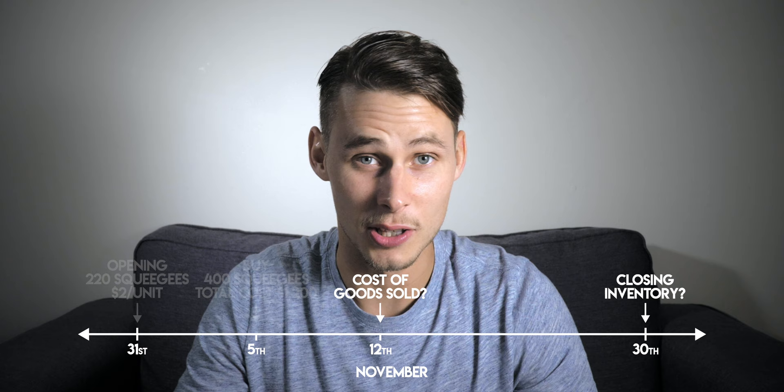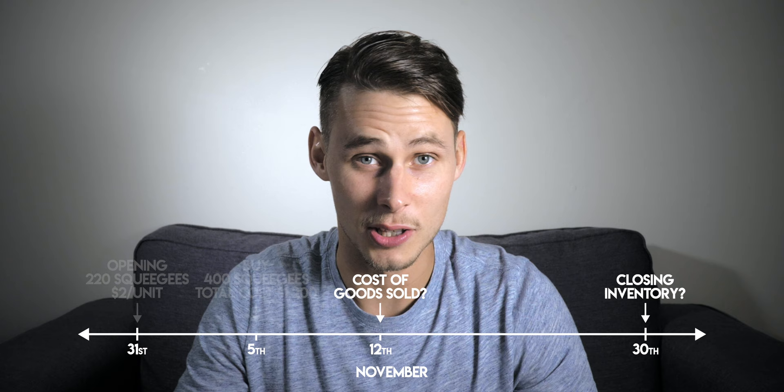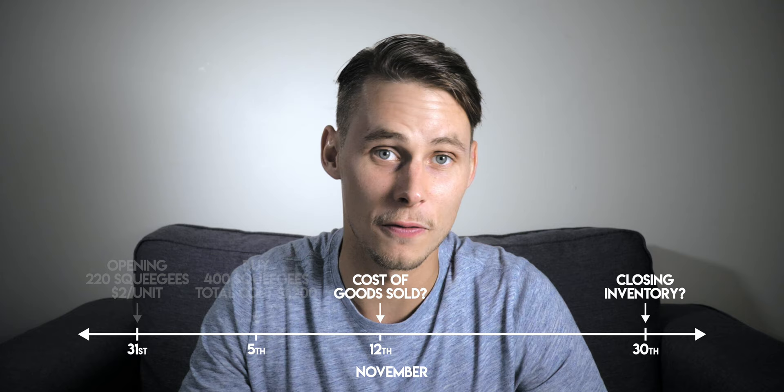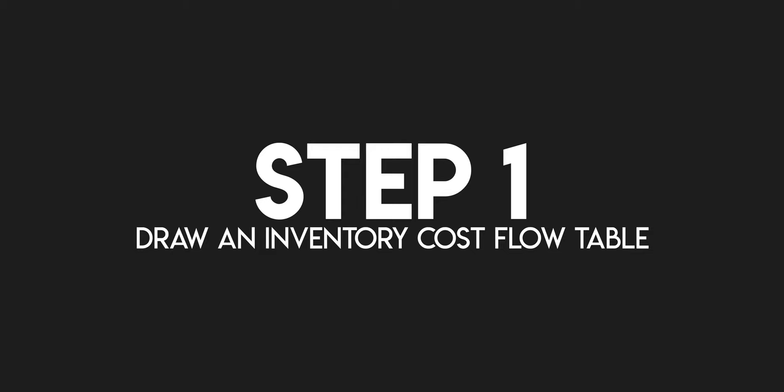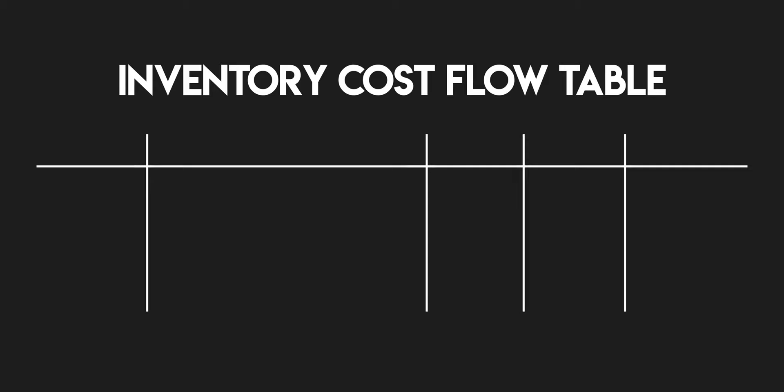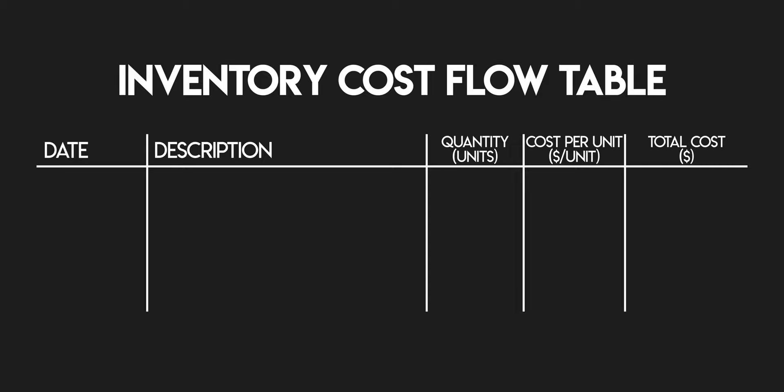First in, first out. To help you get to the bottom of this, I've put together four steps which we're going to run through now. You can also find them on my cheat sheet — I'll link to it down below. Step one: draw an inventory cost flow table. It's a table made up of five columns: date, description, quantity, cost per unit, and total cost.